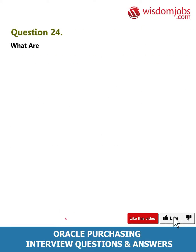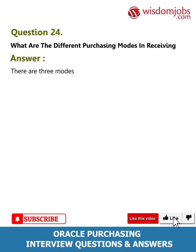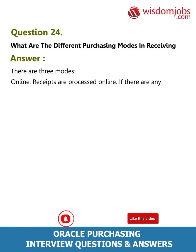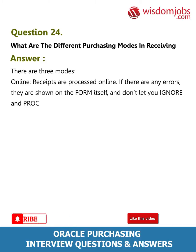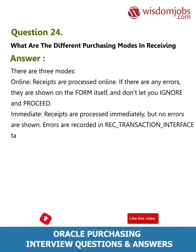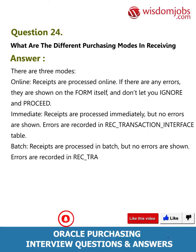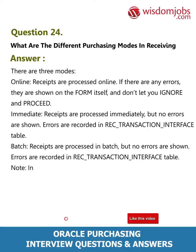Question 24: What are the different purchasing modes in receiving? Answer: There are three modes. Online: receipts are processed online; if there are any errors they are shown on the form itself and don't let you ignore and proceed. Immediate: receipts are processed immediately but no errors are shown; errors are recorded in the RCV transaction interface table. Batch: receipts are processed in batch but no errors are shown; errors are recorded in the RCV transaction interface table.